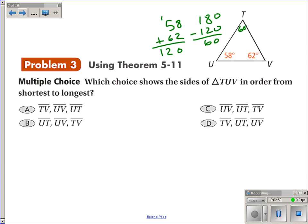Okay, so I want to find the side lengths in order from shortest to longest. So the shortest side length will be opposite the smallest angle. Here's the smallest angle, so across from it is TV. So TV must be the shortest side length.